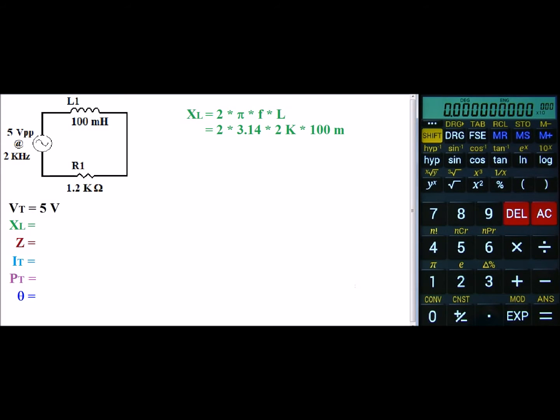So we have 2 times pi times 2 exponent 3, which is k, times 100 exponent negative 3, which is milli. And that gives us an inductive reactance of 1.257k.